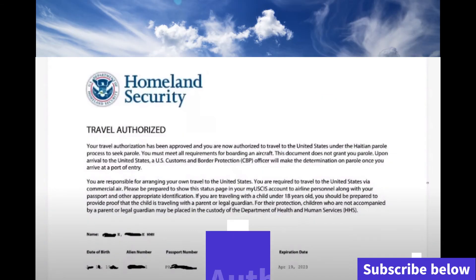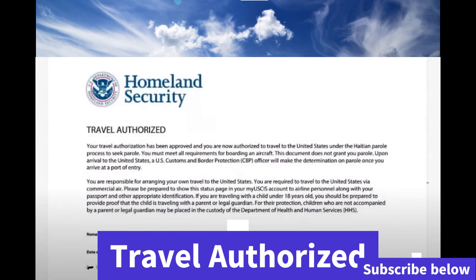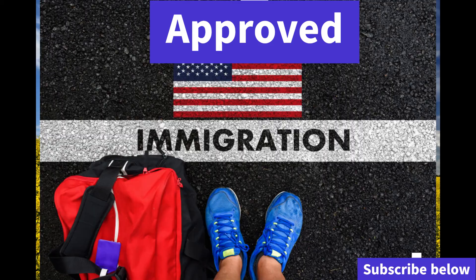Next is the travel authorization we requested using the CBP app. As you can see on the screen, the person was approved to travel to the U.S. Once you're approved, you have 90 days to travel to the U.S. — if that window expires, you cannot travel and will have to reapply.